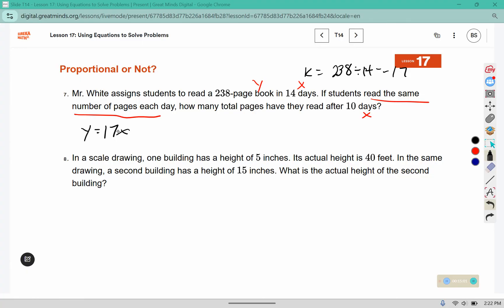Y equals kx this time we're replacing the x with the number 10. 17 times 10 is 170 pages in 10 days.